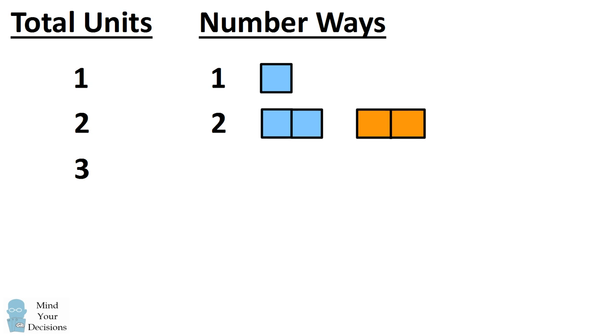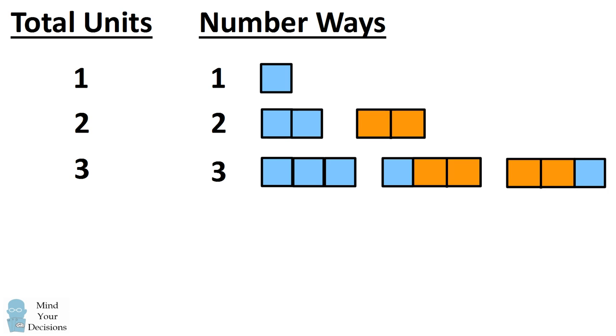What about three units? Now we can have three short syllables. We can start out with a short syllable followed by a long syllable. Or we could start off with a long syllable and end with a short syllable. So there are three total ways to compose three units of metrical beat.